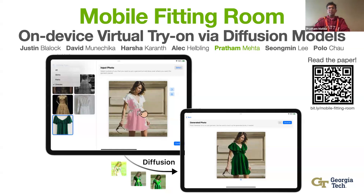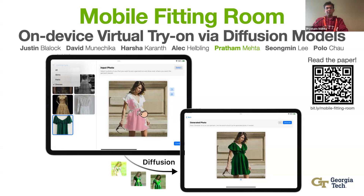Mobile Fitting Room leverages on-device machine learning to personalize virtual try-on while preserving user privacy. With this tool, users can select a garment to virtually try on and highlight the area on their body where they want the garment to be placed. The try-on images are then generated on-device for the user to view.